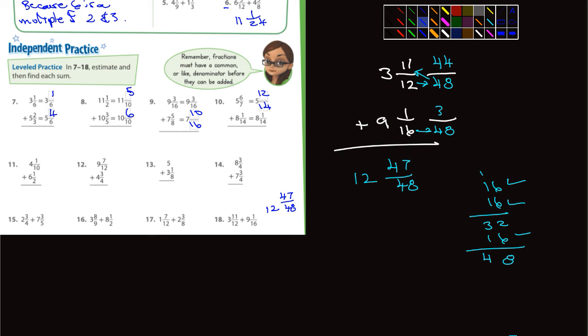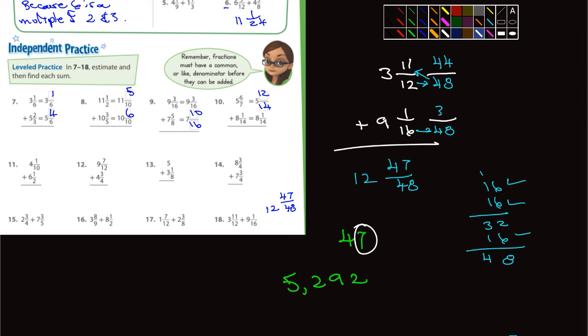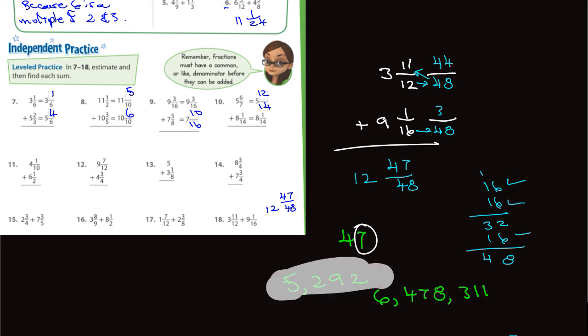2 doesn't go into 47 evenly. Do you know how to tell if a number is divisible by 2? Like 47 — I look at the last digit. Does 2 go into 7 evenly? No. Even with a really large number like 5,629 or 6,478,311, you just look at the last digit. If 2 goes into it evenly, the whole number is divisible by 2. If not, it isn't.